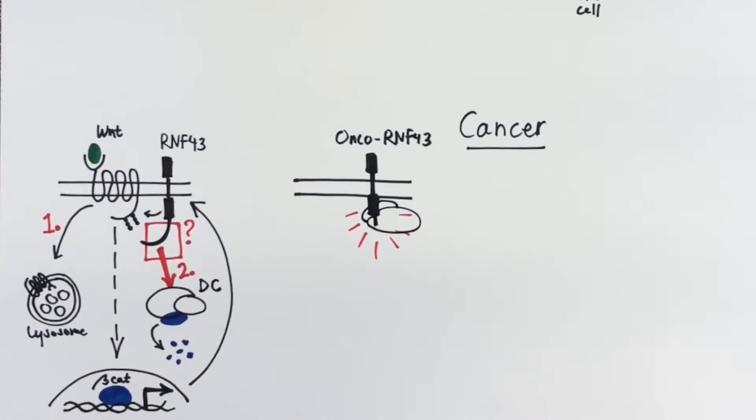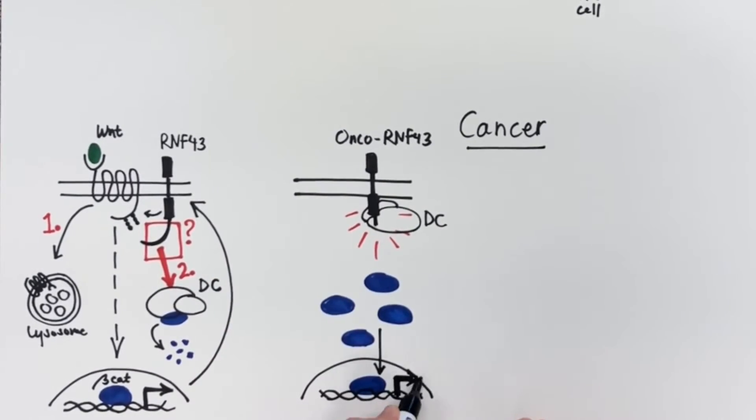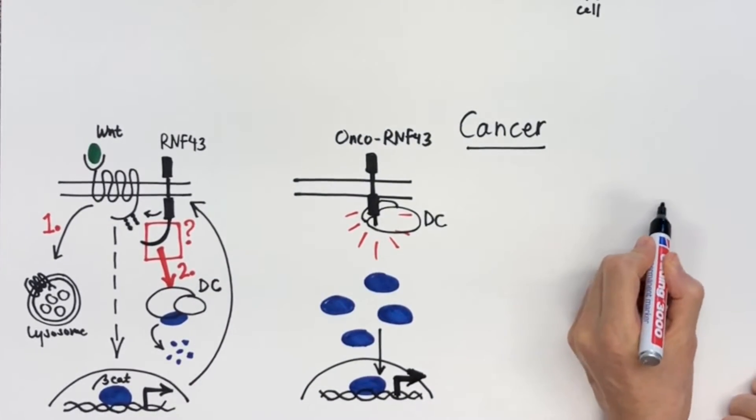We found that the truncated protein traps part of the destruction complex, which mediates beta-catenin accumulation and its translocation to the nucleus, where it induces Wnt signaling in the absence of Wnt ligand.